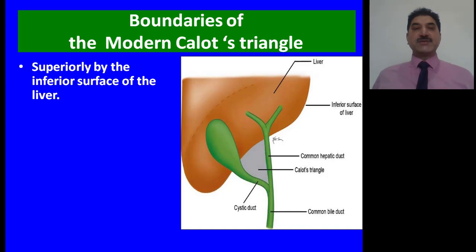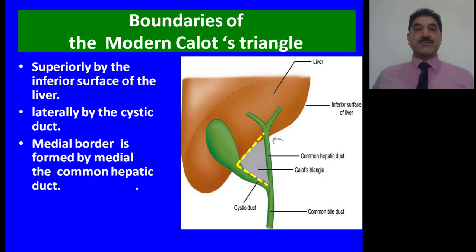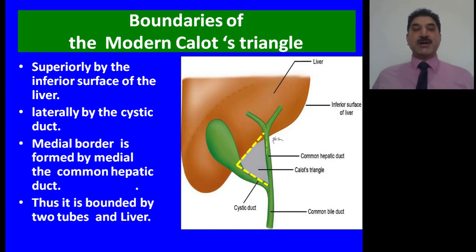The boundaries of this triangle are: it is bounded superiorly by the inferior or visceral surface of the liver, laterally by the cystic duct, and its medial border is formed by the common hepatic duct. Thus, it is bounded by two tubes — the common hepatic duct and the cystic duct — and the liver.